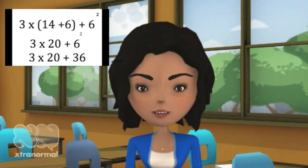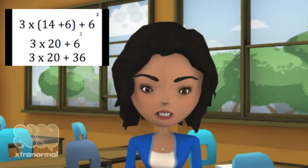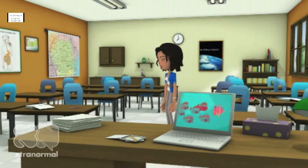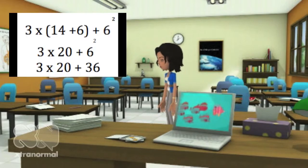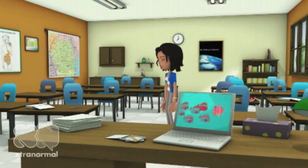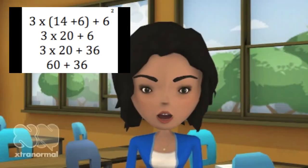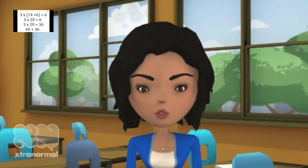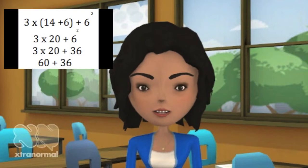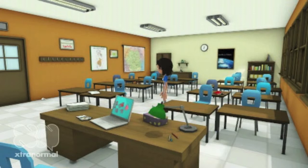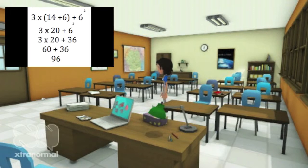So now my expression reads 3 times 20 plus 36. I have done all of the parentheses and exponents. Now I need to go left to right looking for any multiplication or division. I see that there is some multiplication left, so I will multiply 3 times 20, which has a product of 60. My expression now says 60 plus 36. I see there is no more multiplication or division, so now I will look for any addition or subtraction. I will add 60 and 36 for a sum of 96.